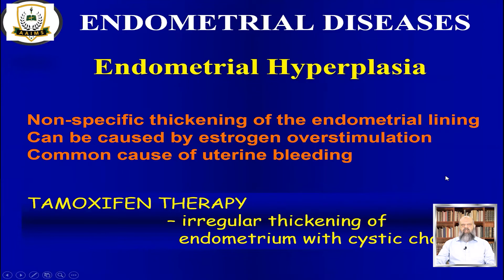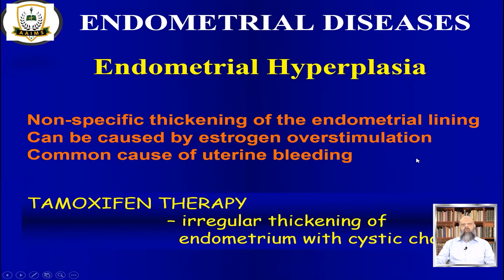An important endometrial disease is endometrial hyperplasia — non-specific thickening of the endometrial lining that can be caused by estrogen over-stimulation, which is a common cause of uterine bleeding. When we get a woman with uterine bleeding, we have to keep in mind that the patient may have over-stimulation by estrogen, or the patient can have postmenopausal bleeding due to tamoxifen therapy or due to estrogen over-stimulation from some medication.